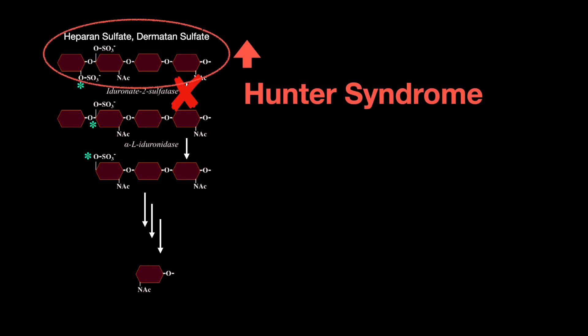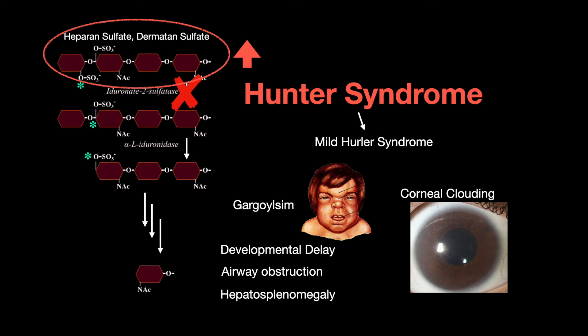A deficiency in iduronate-2-sulfatase results in Hunter syndrome, which is a milder form of Hurler syndrome — minus the corneal clouding, but with aggressive behavior. Hunter syndrome is also an X-linked recessive disorder.